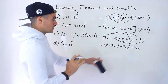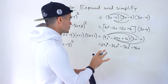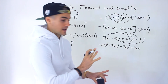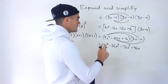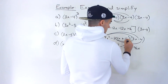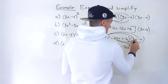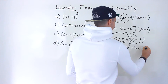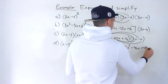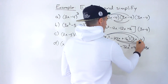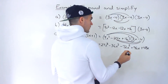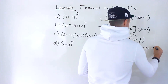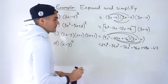Be really careful with the signs here. I'd recommend drawing these arrows out to make sure you're covering everything. Moving on to the 16: 16 times 3x gives positive 48x, and 16 times negative 4 gives negative 64.